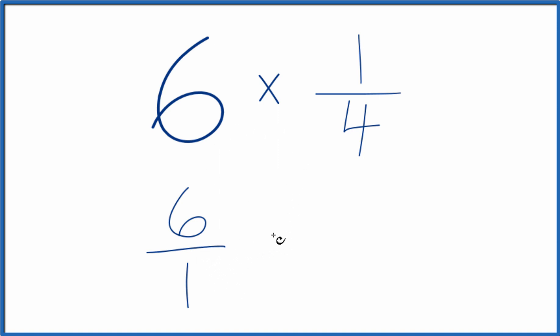But now we can have 6 times 1 fourth like this, and when we multiply fractions, we multiply the numerators, then the denominators. 6 times 1 is 6, and 1 times 4 is 4.